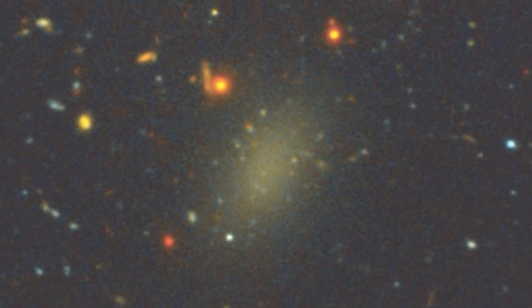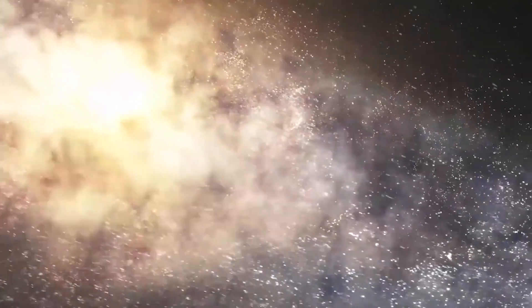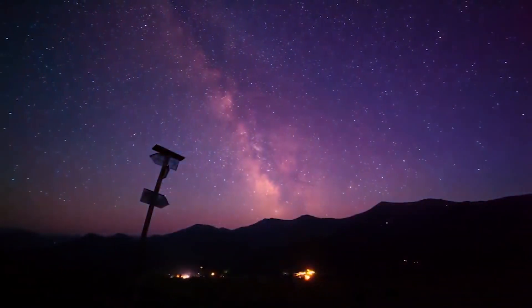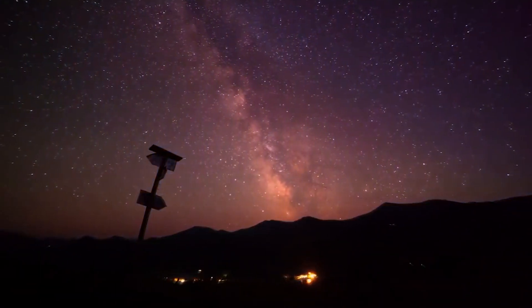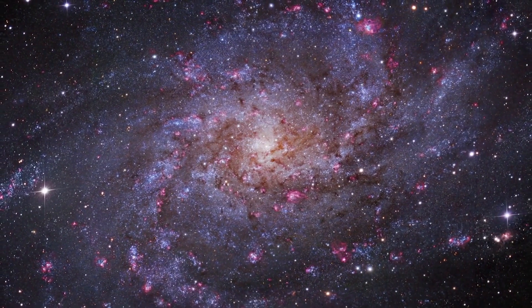On the other hand, the most massive stars, known as hypergiants, may be 100 or more times massive than the sun and have surface temperatures of more than 30,000 Kelvin. Hypergiants emit hundreds of thousands of times more energy than the sun but have lifetimes of only a few million years.